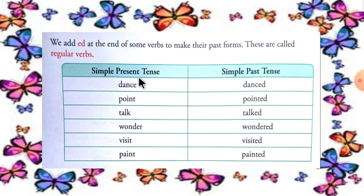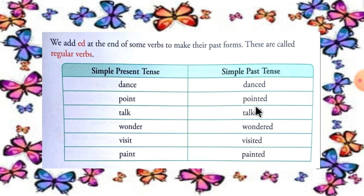Simple present tense and simple past tense. Let's see the regular verbs table: dance — danced, point — pointed, talk — talked, wonder — wondered, visit — visited, paint — painted.